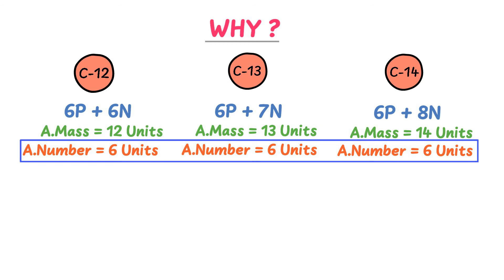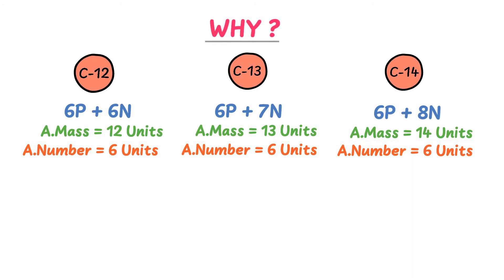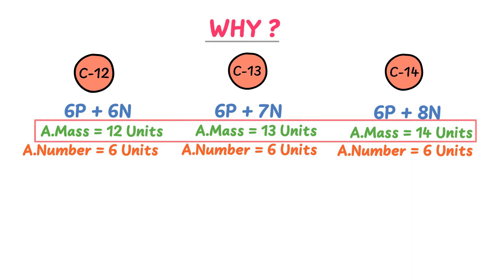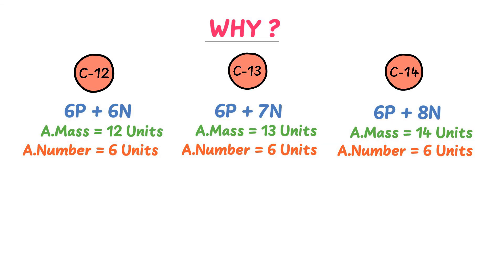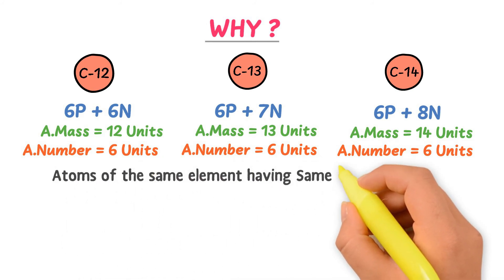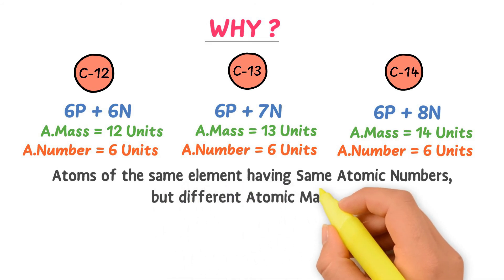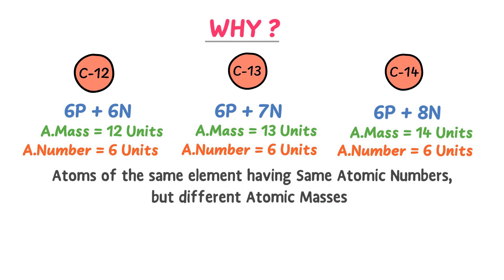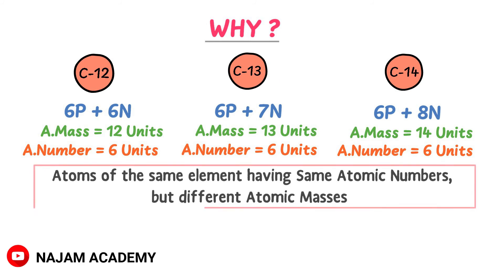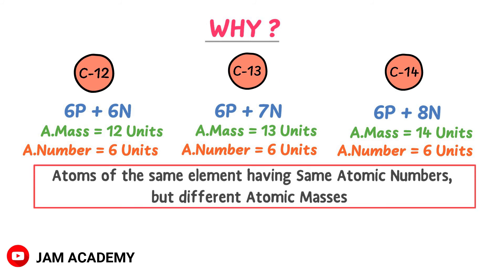Now look at the atomic numbers of these atoms — they all have the same atomic number, six units, because they all have six protons. But they have different atomic masses because of having different numbers of neutrons. So we can also define isotopes as atoms of the same element having the same atomic number but different atomic masses.